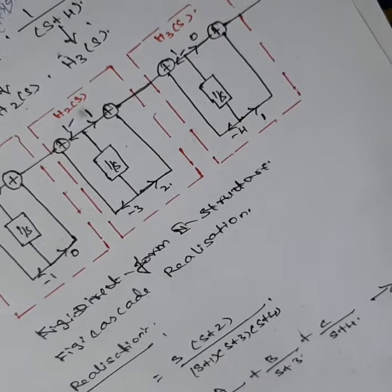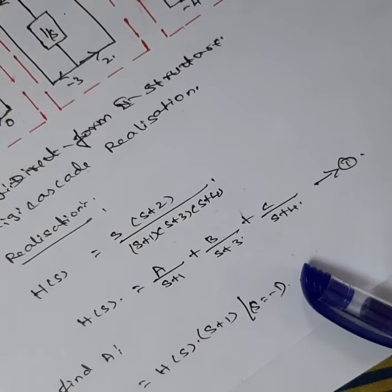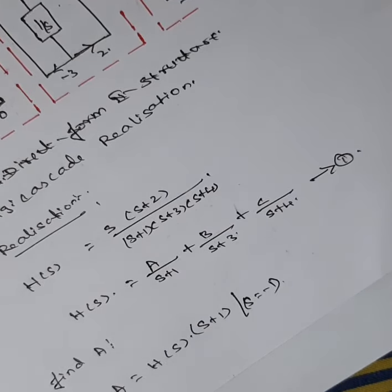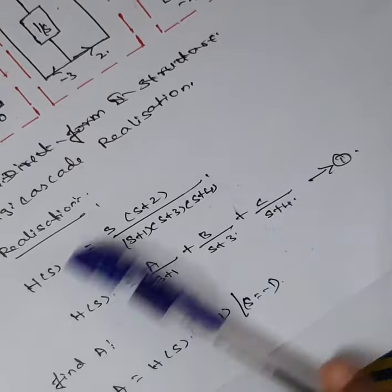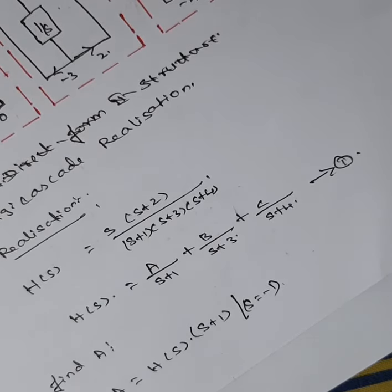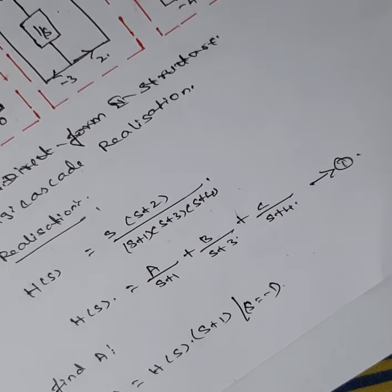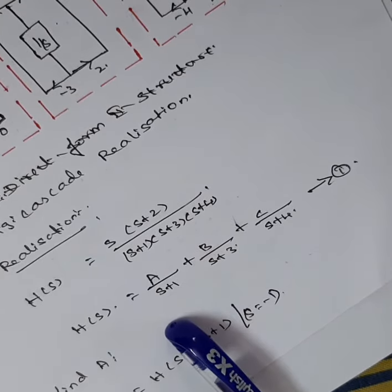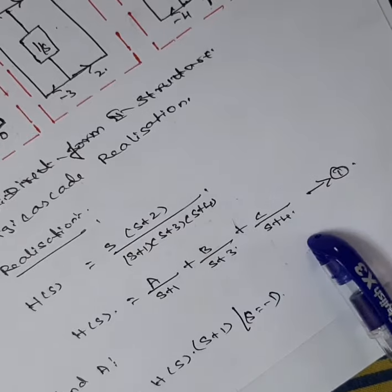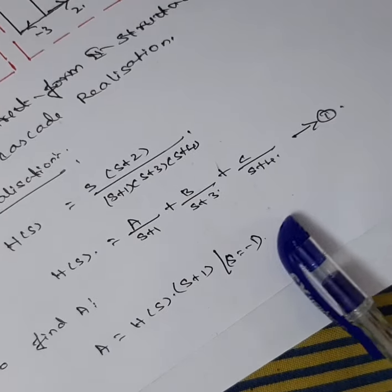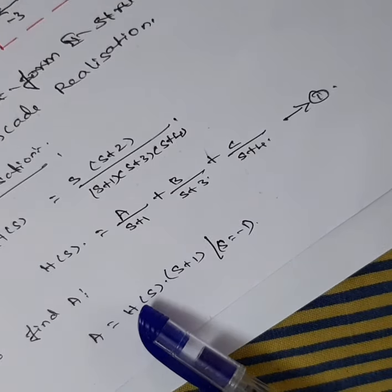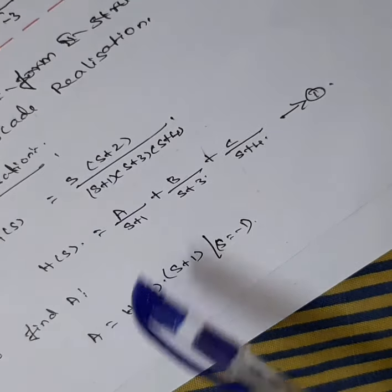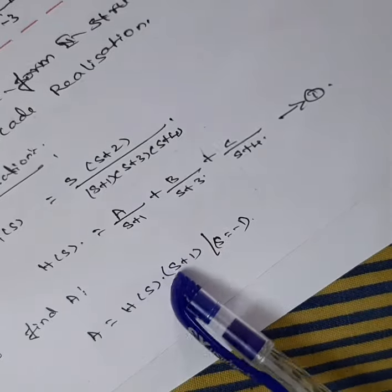For the parallel realization, we need H(s) in the form H1(s) + H2(s) + H3(s). To achieve this, we solve the given function using partial fraction method: H(s) = A/(s+1) + B/(s+3) + C/(s+4). We need to find the values of A, B, and C.